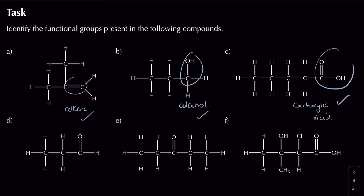Looking at the next compound, we have a C=O double bond at the end of the chain — so we don't have a carboxylic acid, we have an aldehyde. It's not a ketone because the carbon-oxygen double bond is at the end of the chain. For the compound after that, the carbon-oxygen double bond is no longer at the end of the chain — it's somewhere in the middle — so this is a ketone.